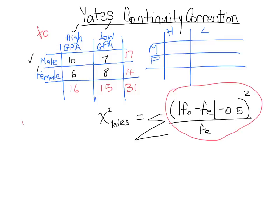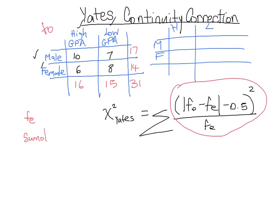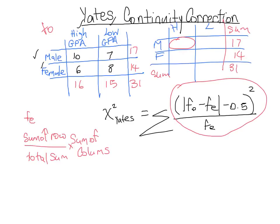Recall that in order to figure out fe values we need to do the sum of the row over total sum times the sum of the column. I'll do one just to remind you. If we wanted to fill in that value, let's put the sums in so we know what they are. They're the same as they were in the other table, so our sums were 17, 14, 31, 16 and 15.